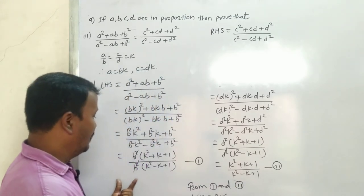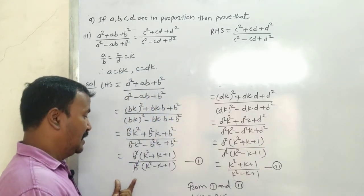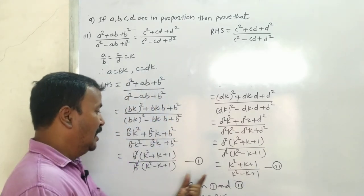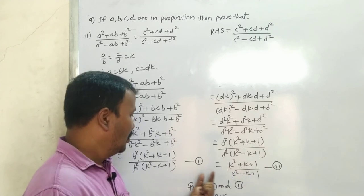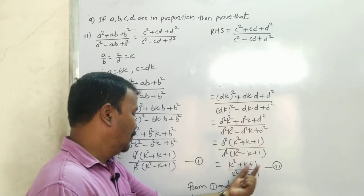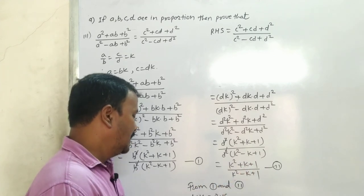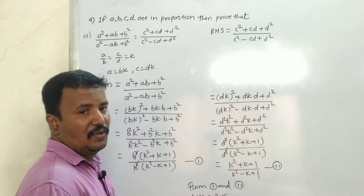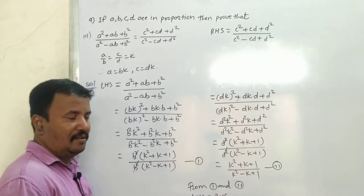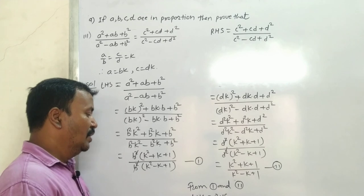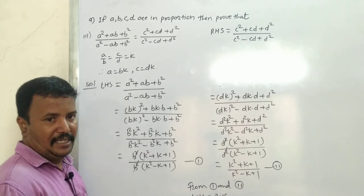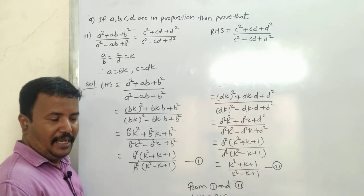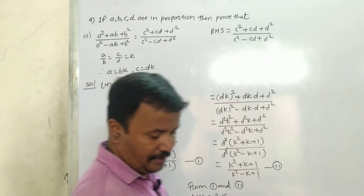Notice that LHS gives (k² + k + 1) / (k² - k + 1) and RHS also gives (k² + k + 1) / (k² - k + 1) — they are the same. So from (1) and (2), LHS is equal to RHS. Proved. Write it down.